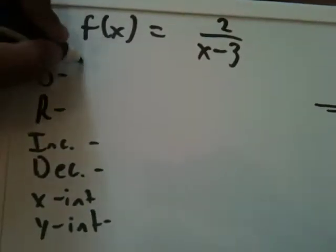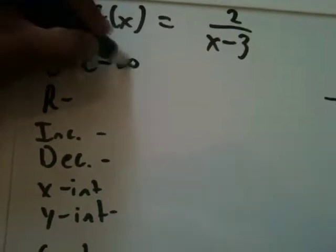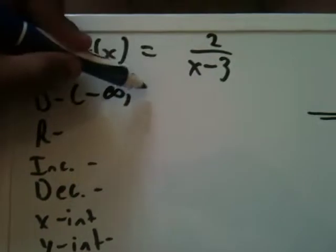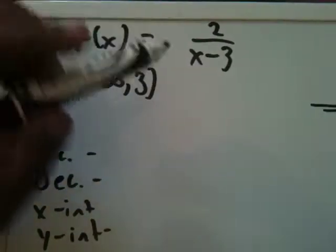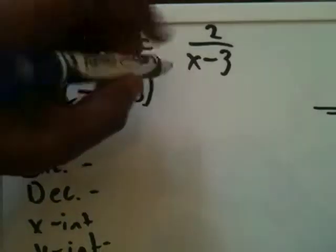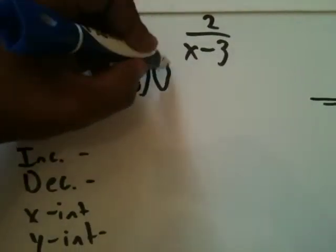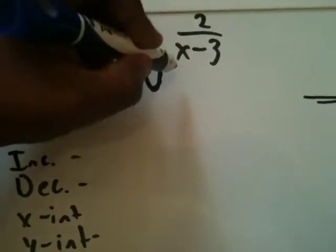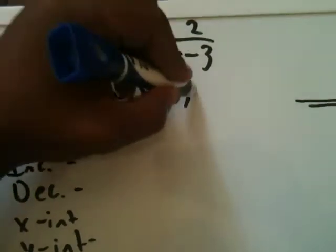So we write this as negative infinity comma 3, and that's going to be an open parenthesis, meaning you can't put that in. Union. That's a u, not a v. Then 3 to positive infinity.